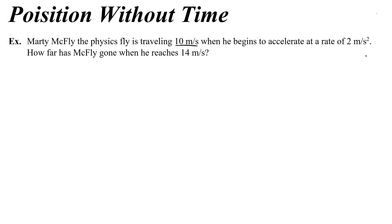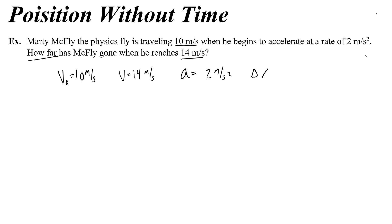My initial velocity is 10 meters a second, my final velocity is 14, my acceleration is 2 meters per second squared, and I need to figure out how far — that is the displacement delta x. But here I run into a problem: I don't know an equation that has these four variables in it. So what I need to do is first figure out how much time this took, then use that time in another equation.